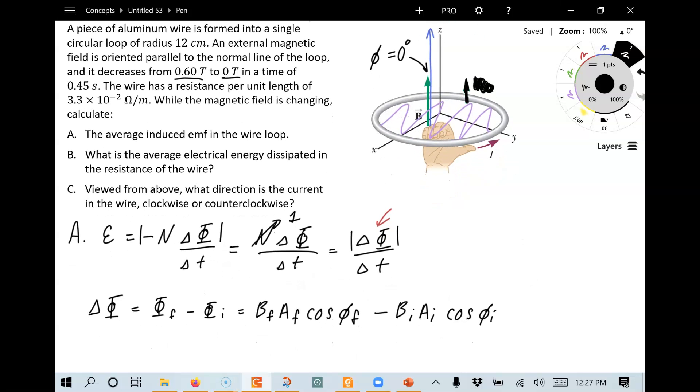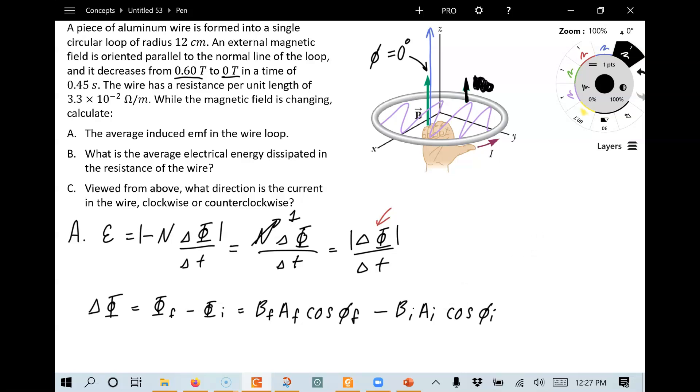However, another way to sometimes do this, which is easier, is to note that of all these things, the magnetic field, the area, and the angle, which can change. Not all of them do change always. So another way to do this is just write this out like this. Okay, what's phi equal to? Well, phi is equal to B, A, cosine of this angle, little phi. And if any of those things don't change, I can factor them out of the delta symbol.